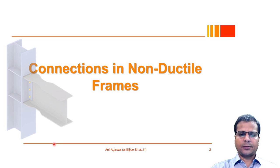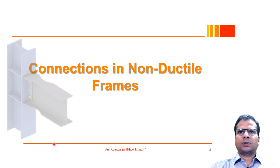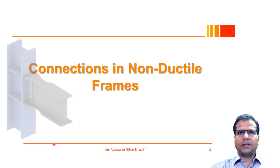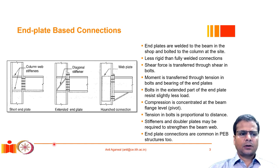In the previous class we saw a couple of different types of rigid connections. One configuration used an end plate welded to the beam and then bolted to the column flange. Another alternative was to use two T-stubs, which behave in somewhat similar fashion to an end plate. A completely different variety involves directly welding the beam flange to the column, or sometimes using a cover plate. The first variety we discuss today uses an end plate, and there are several different configurations within that domain.